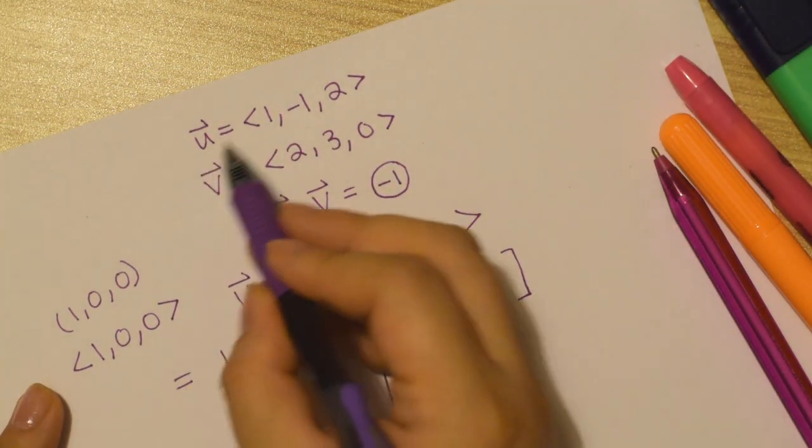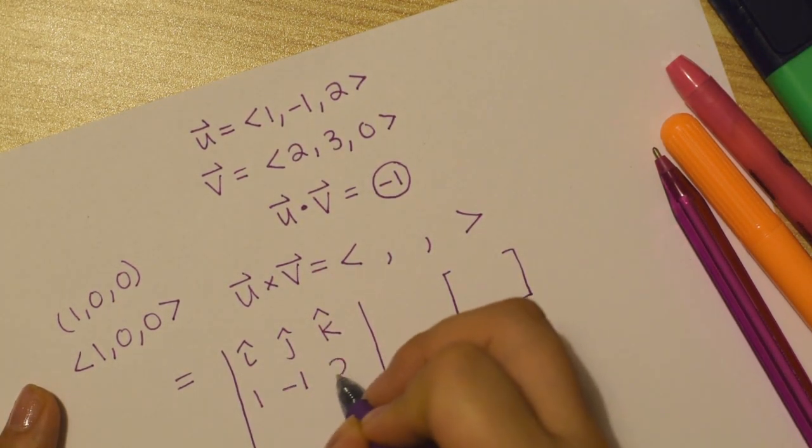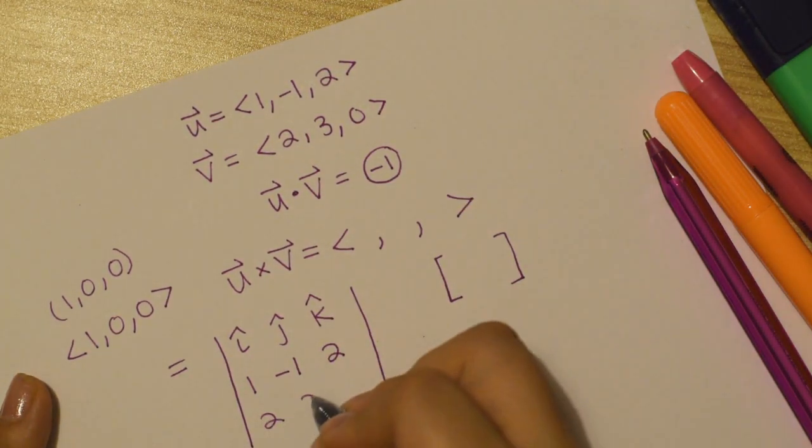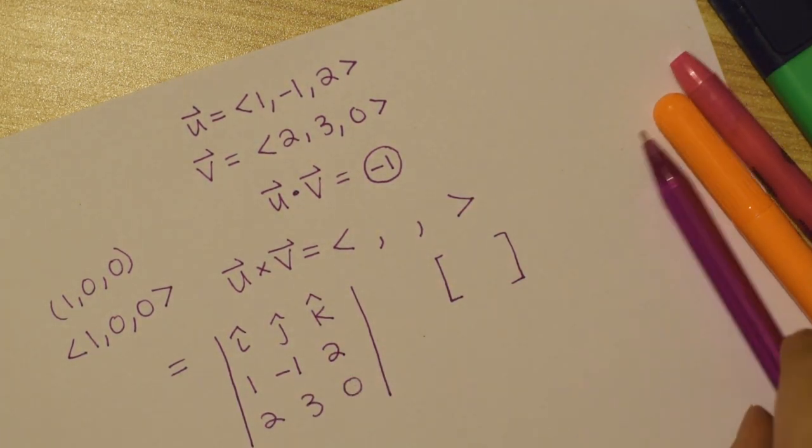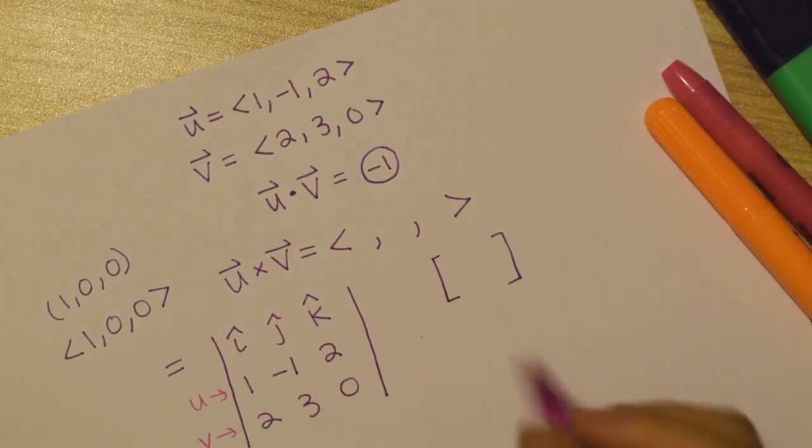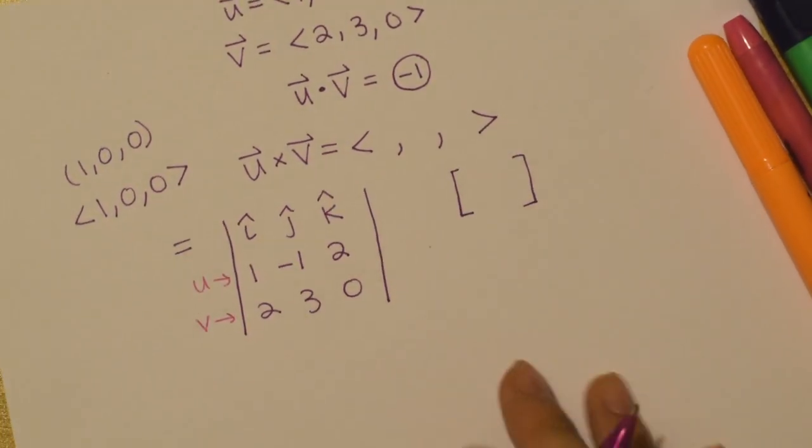The second row is going to be u, whatever those coordinates are. So I'm just going to copy it across. And then the third row, you guessed it, is v. So 2, 3, 0. And so this is u going across with the coordinates lined up. And this is v with the coordinates lined up. And that's it.